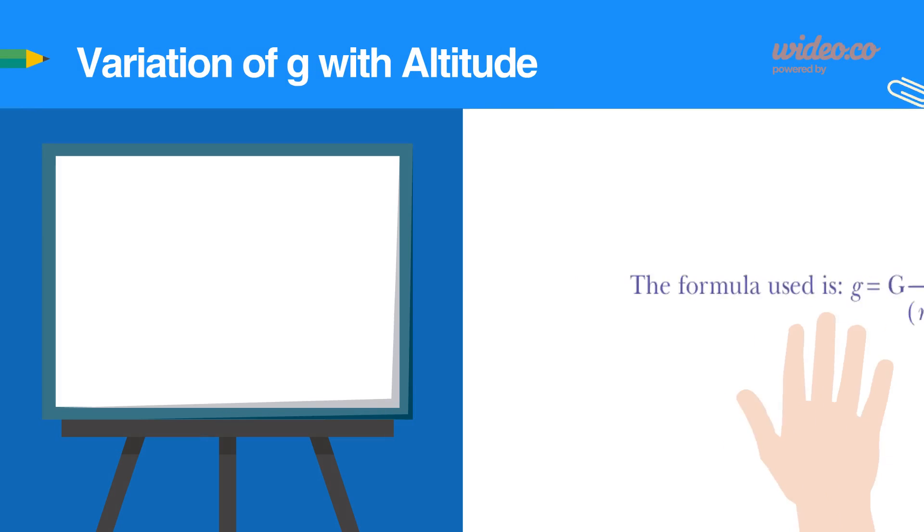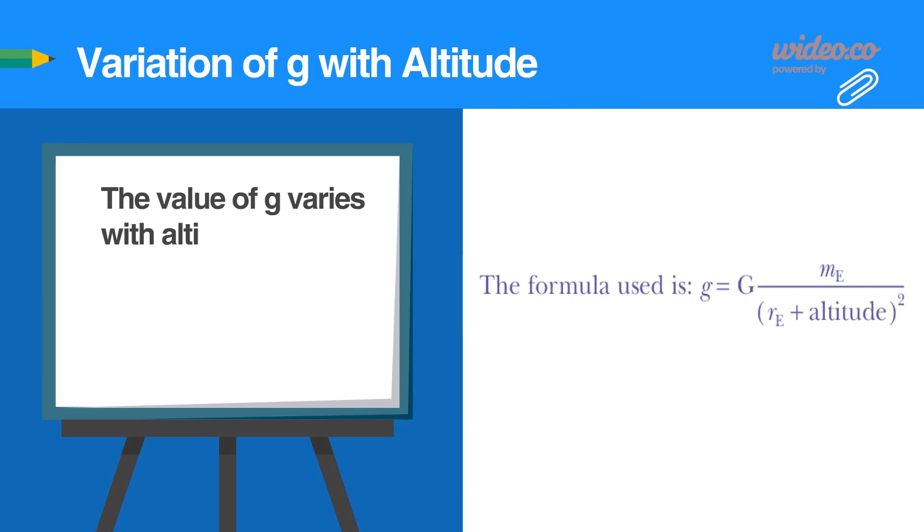The formula for G shows that G will also vary with altitude above the Earth's surface. By using a value of r equal to the radius of the Earth plus the altitude, the following values can be easily calculated.